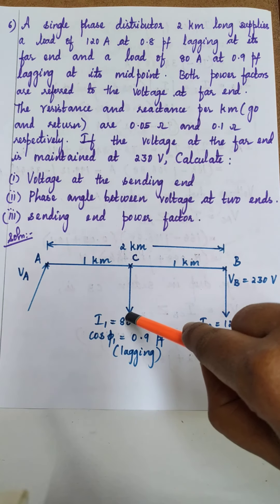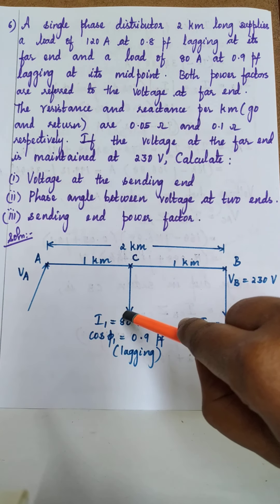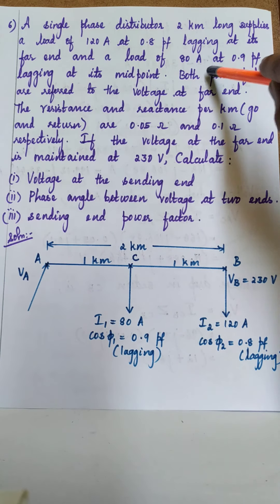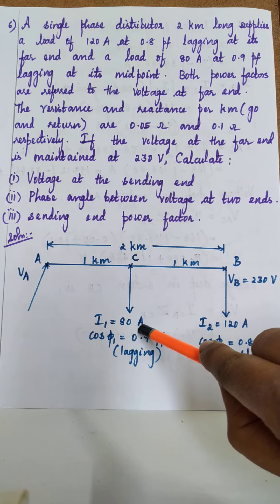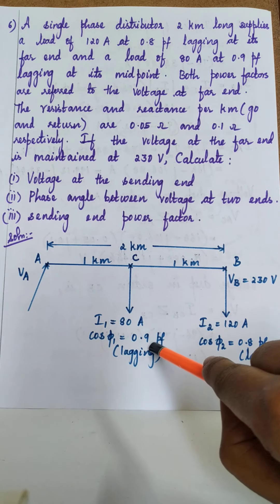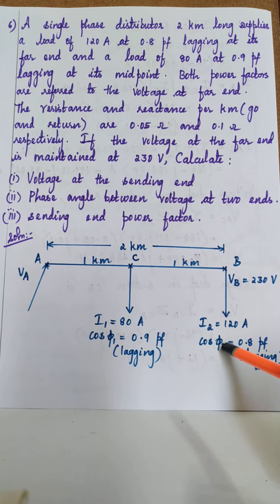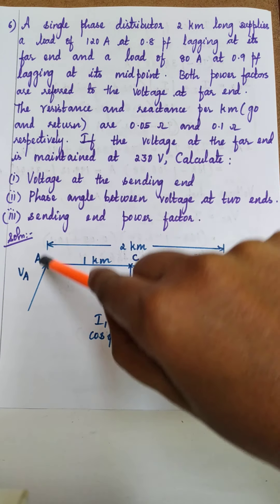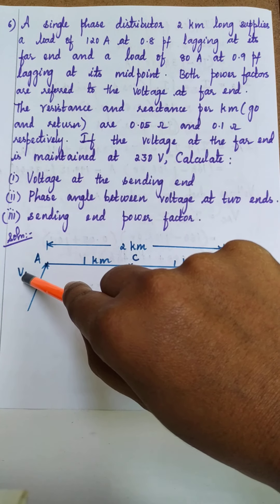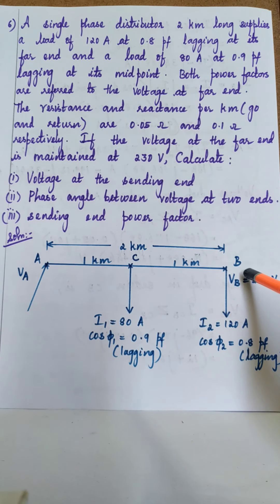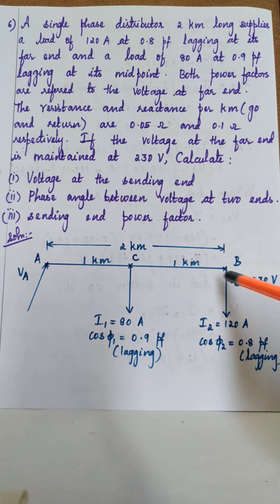The load current at the midpoint is I1 = 80 Ampere at 0.9 power factor lagging, so cos φ1 = 0.9. Similarly, the load current at the far end is I2 = 120 Ampere with cos φ2 = 0.8 power factor lagging. We take the sending end voltage as VA and the far end or receiving end voltage as VB, which is given as 230 volt.